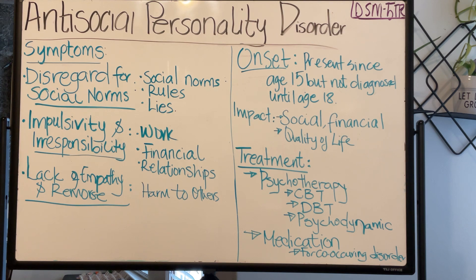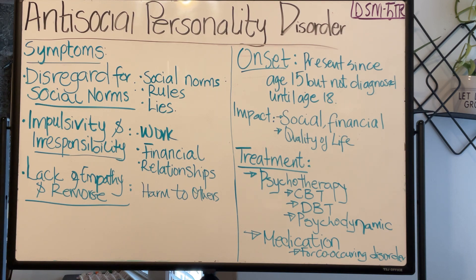The other symptom is impulsivity and irresponsibility. The client with ASPD will demonstrate impulsivity and irresponsibility in various areas of their lives, including work, financial obligations, work commitments, and even interpersonal relationships. This person engages in very reckless behavior, such as excessive spending, substance abuse, and risky encounters including sexual activities, and they don't consider the consequences for themselves or even other people.